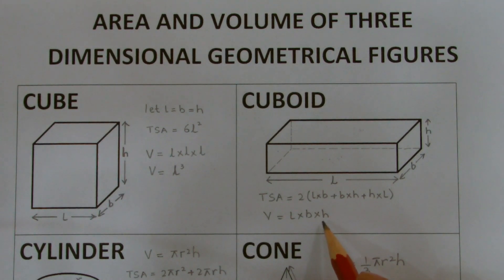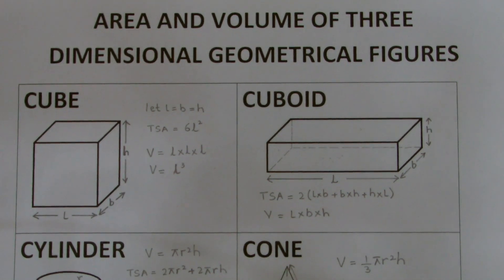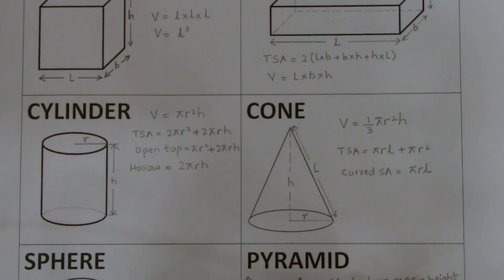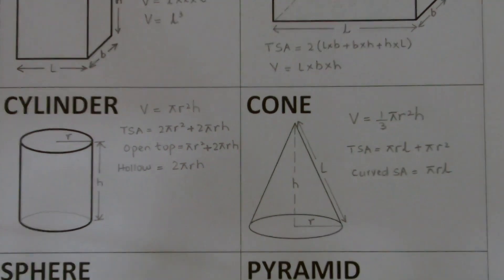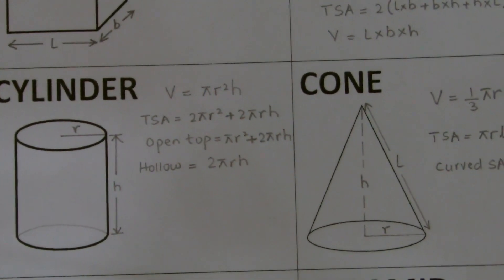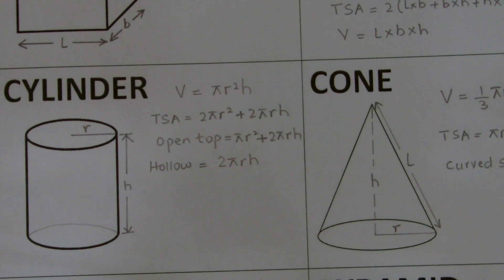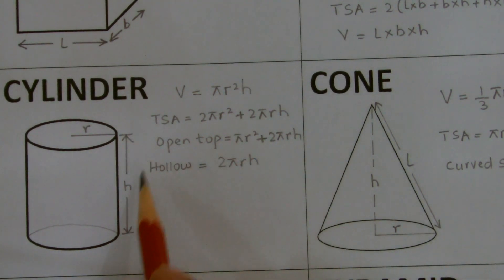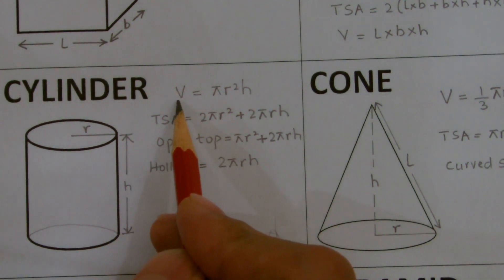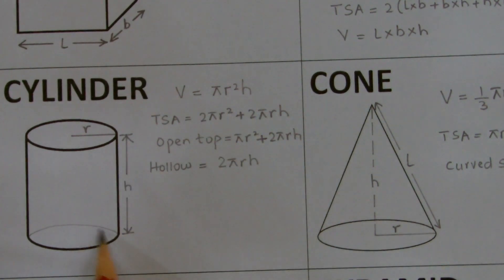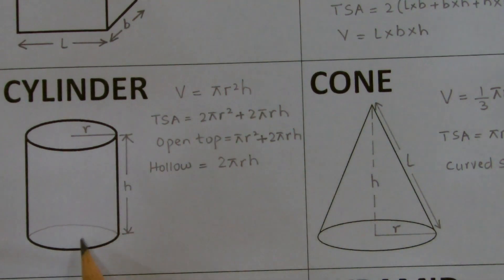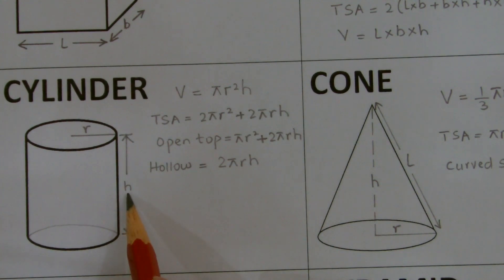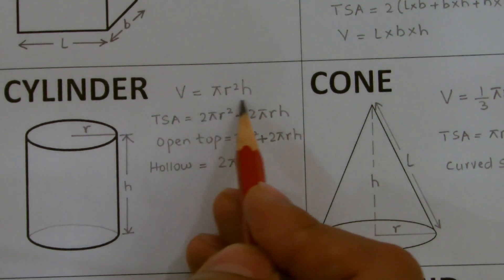Now for the cylinder, there are various formulas related to it. To find the volume, the formula is base area × height. Since the base is circular, the area is πr². Multiplying that by height H gives the formula for volume: πr²H.